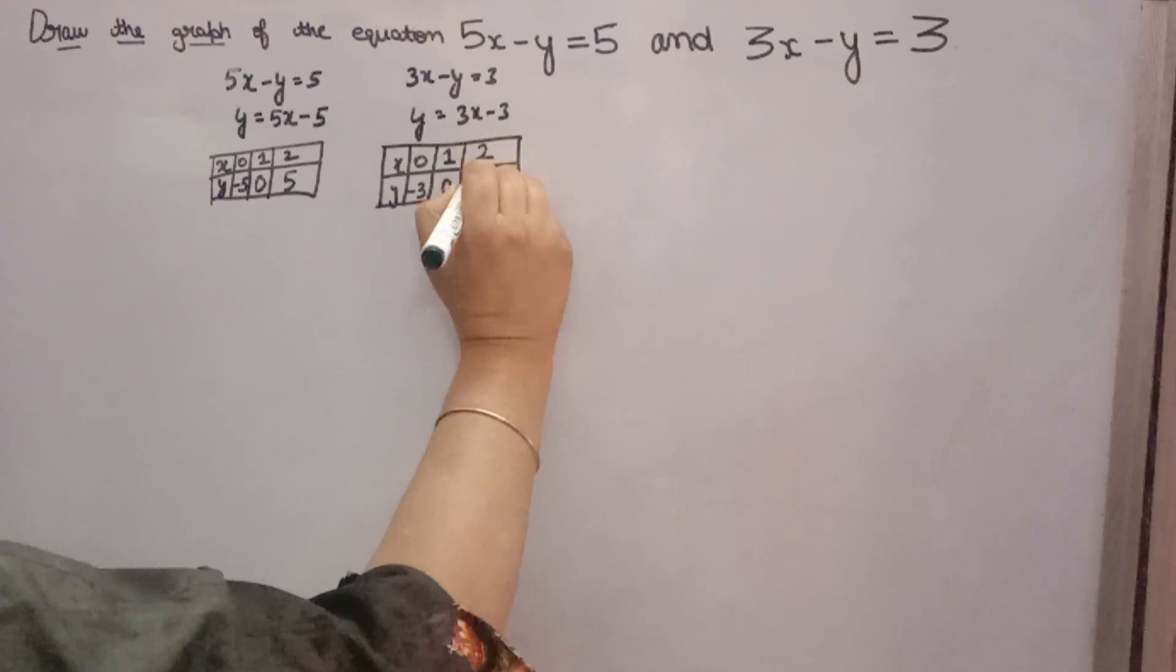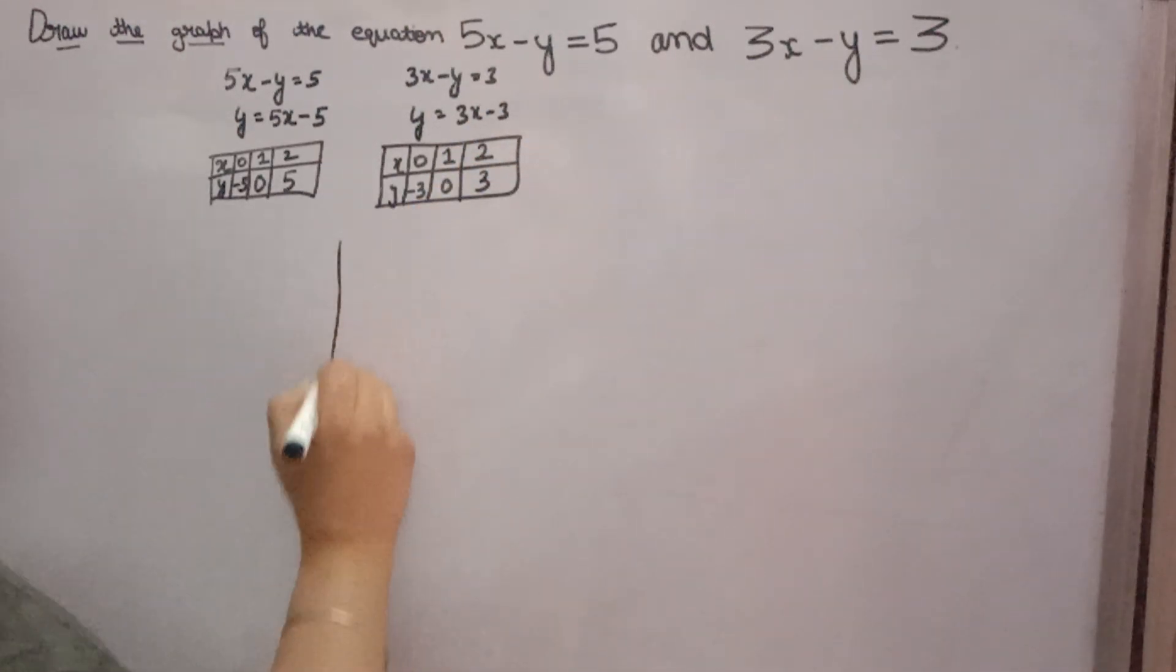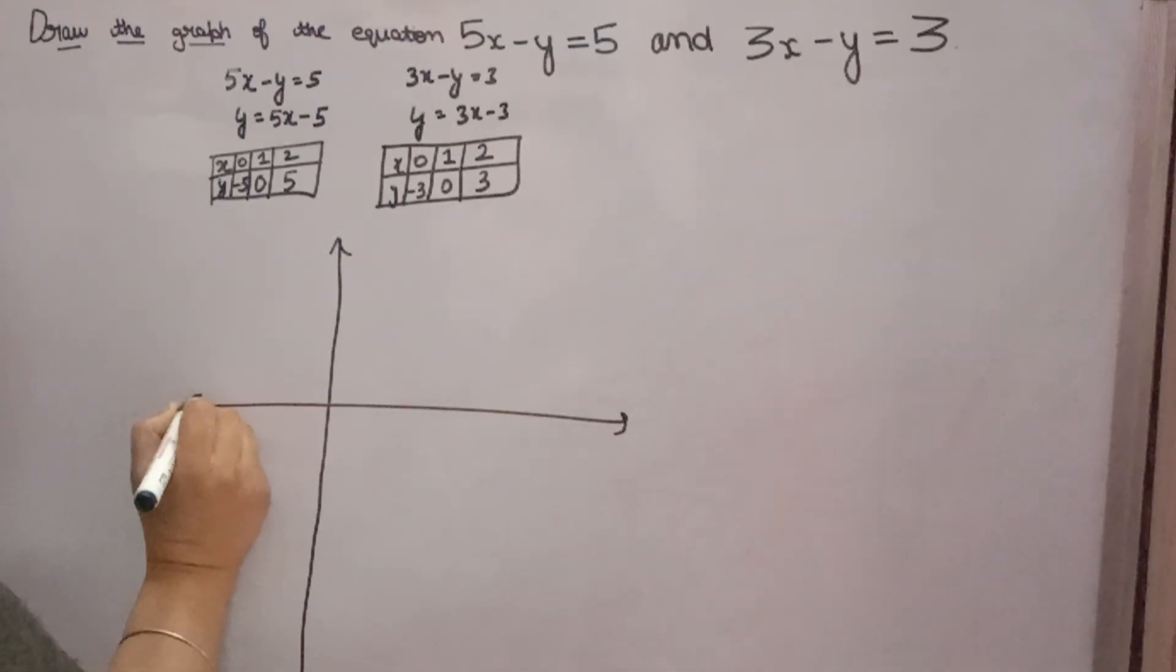Now you have to plot the graph. This is origin 0, 0. Then 0, 1, 2, 3, 4, 5, 6, 7. Now y: minus 1, minus 2, minus 3, minus 4, minus 5, minus 6.